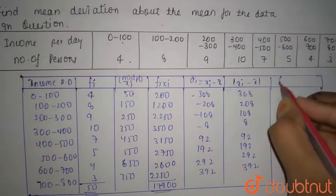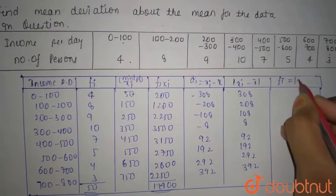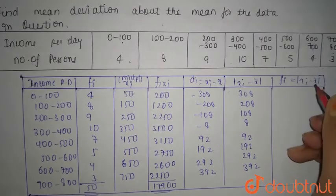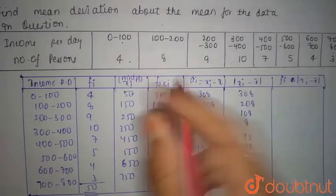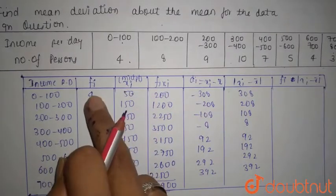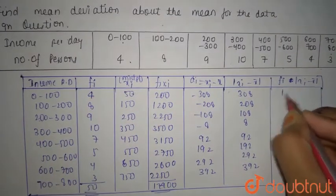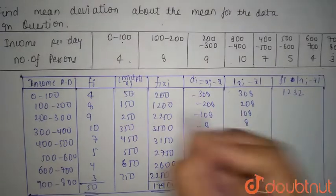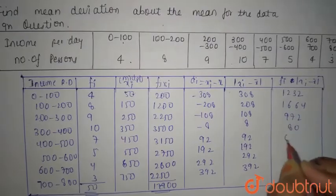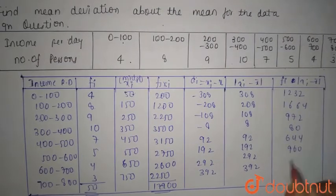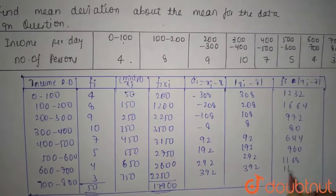Now we are going to take fi |xi - x̄ mod|. This into this: 308 into 4 will be 1232, 208 into 8 will be 1664, similarly 972, 80, 644, 960, 1168, 1176. Multiplying 392 into 3 gives 1176.